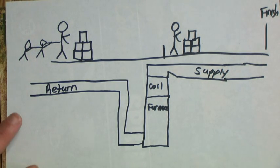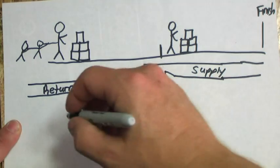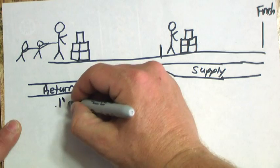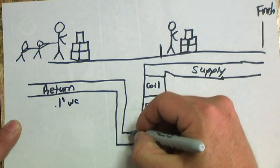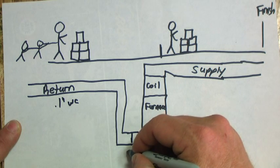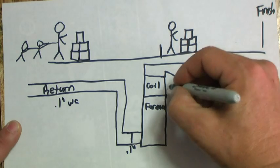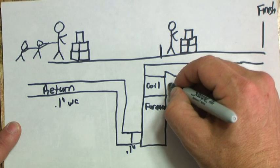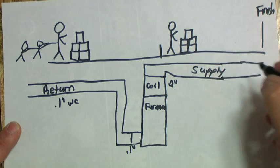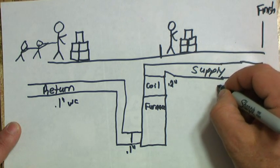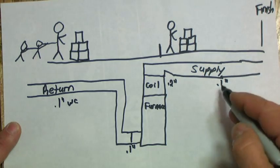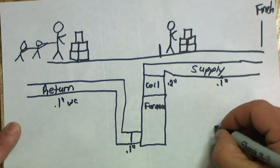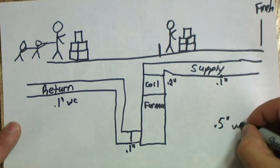So what we want, ideally you would like to try to get like a 0.1 inch water column on your return. You have a filter here. You want a 0.1 inch on it. Then you have a coil, we'll just say 0.2 inch on your coil. Then your supply, we want another 0.1 inch. If you add all these together, two, three, four, five, that gives me my 0.5 inches water column.